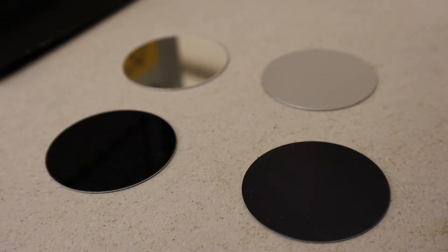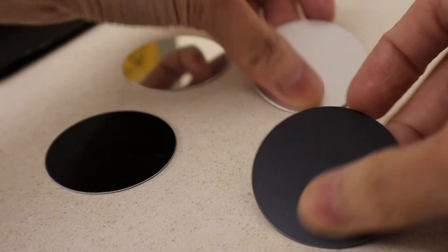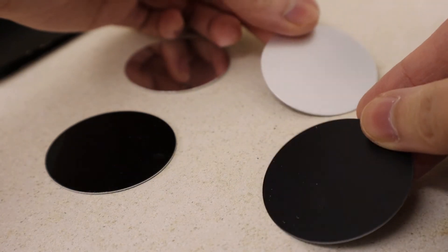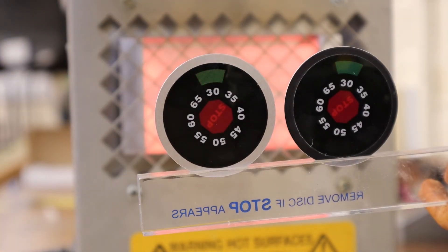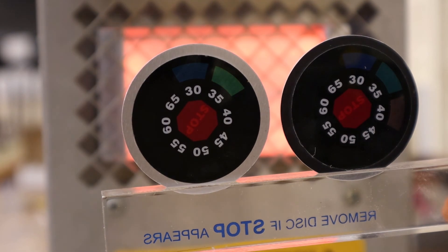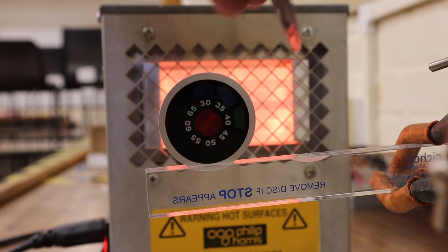Let's take the winners of the two tests and compare them against each other. Matte black and matte silver. So now we can conclude that matte black is the best absorber of heat radiation.